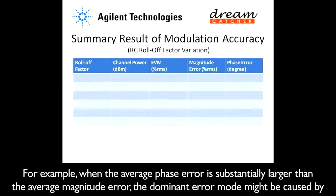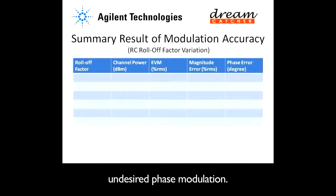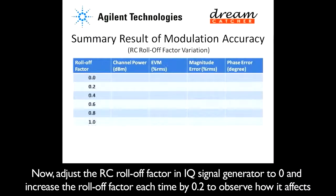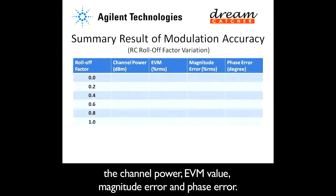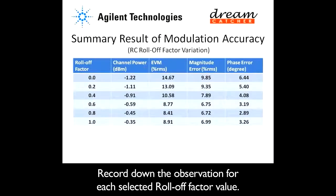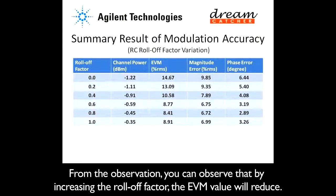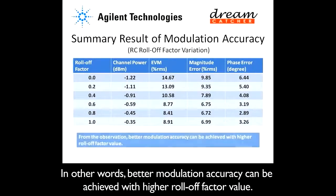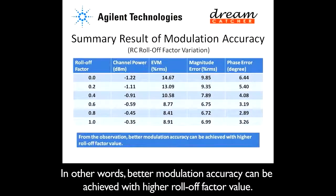Now, adjust the RC roll-off factor in the IQ signal generator to 0, and increase the roll-off factor each time by 0.2 to observe how it affects the channel power, EVM value, magnitude error, and phase error. Record the observation for each selected roll-off factor value. From the observation, you can see that by increasing the roll-off factor, the EVM value will reduce. In other words, better modulation accuracy can be achieved with a higher roll-off factor value.